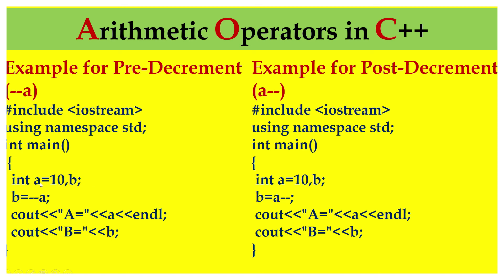Here is an example for pre-decrement and post-decrement. We have declared two variables A equal to 10 and B. Next step, we assign B equal to --A. First, it will be decremented by 1 — so 10 minus 1 equals 9. Therefore B equals 9 and A equals 9. If you display the value of A and B, both are equal to 9.